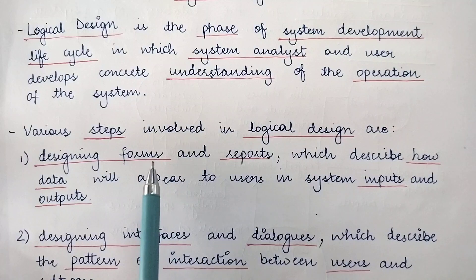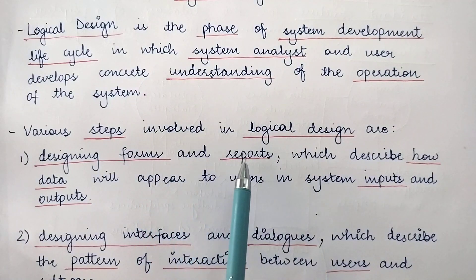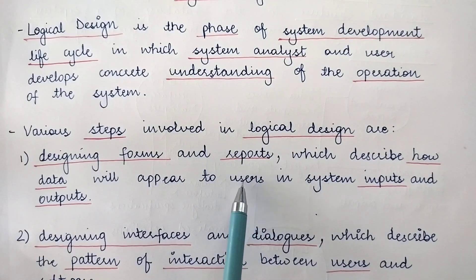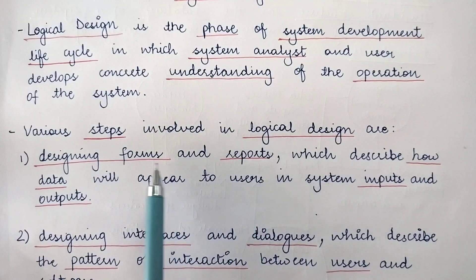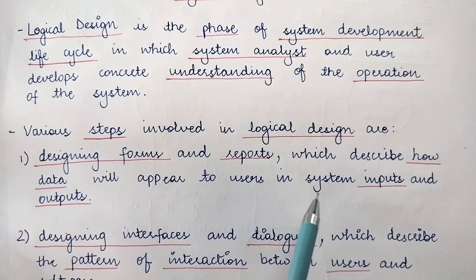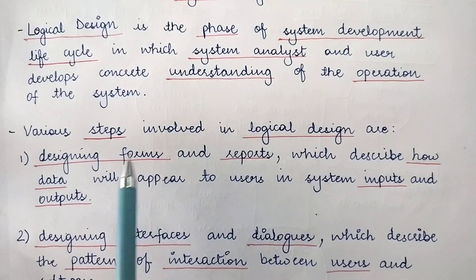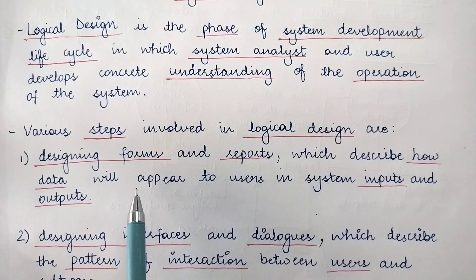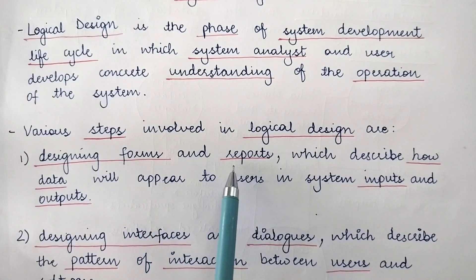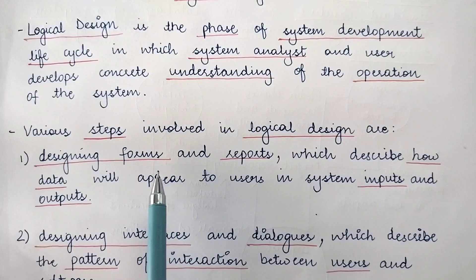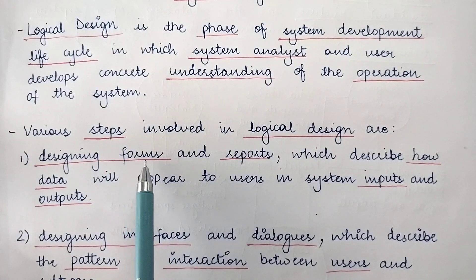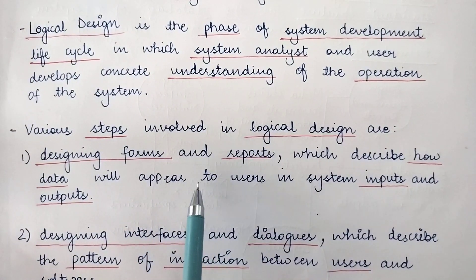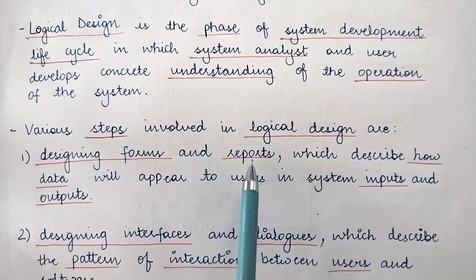Designing forms and reports is the first step in logical design, which basically describes how data will appear to users — the system inputs and outputs. Forms are used for taking the system inputs and reports are used for providing the system outputs. So basically, how the data will appear as input through forms and how data will appear as output in the form of reports.